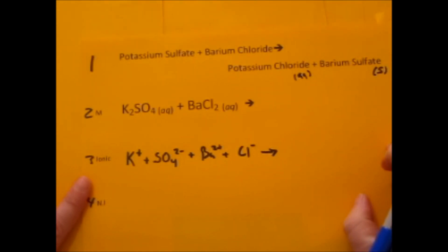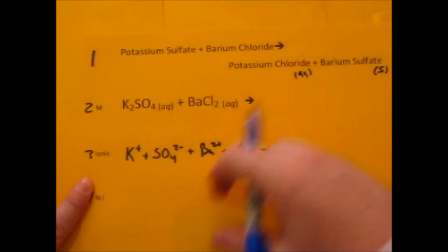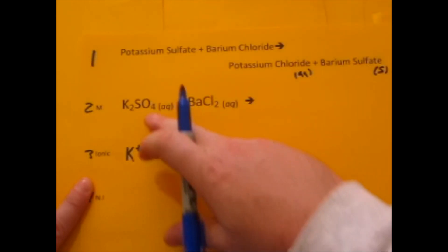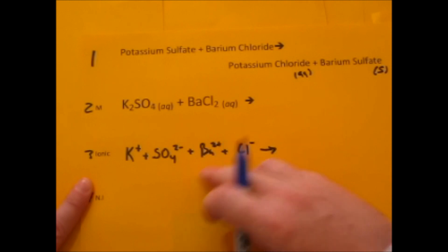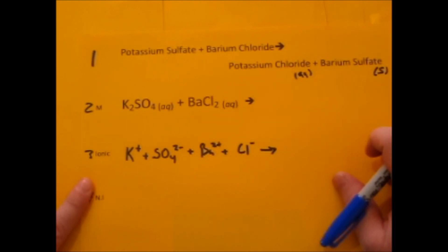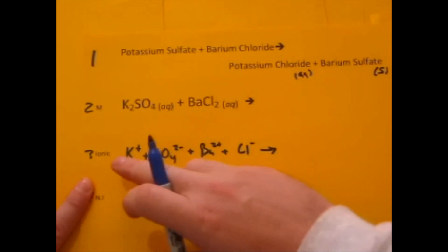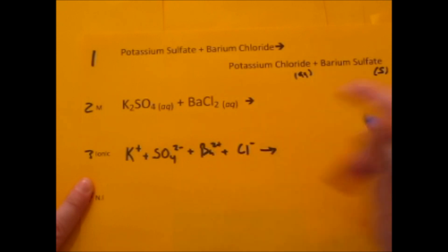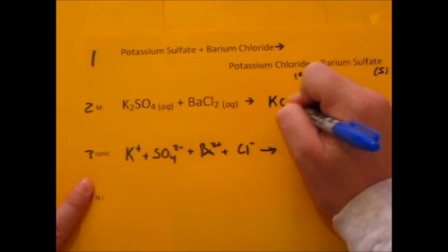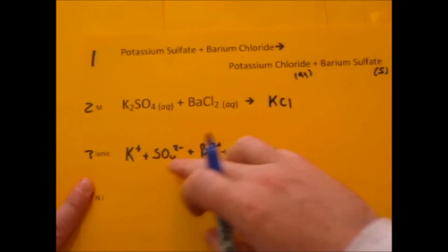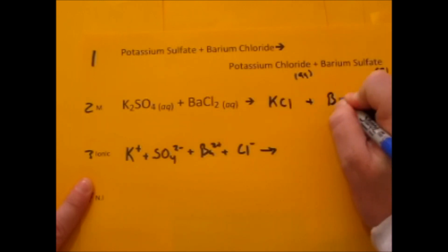Now that we have our four ions, we can do our formulas. This formula is already done. So plus one and minus two, there's our ratio, K₂SO₄. Same thing with barium chloride. We can use these ions to figure out our products. Potassium chloride - take potassium at plus one and chloride at minus one and there's a ratio, one to one. For barium sulfate, barium's plus two, sulfate's minus two. That's also a one to one ratio.